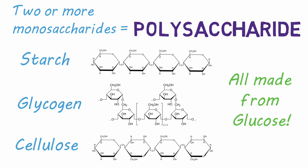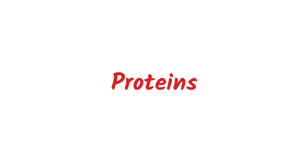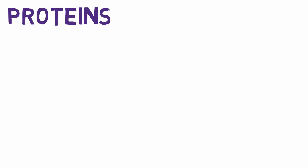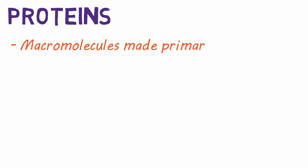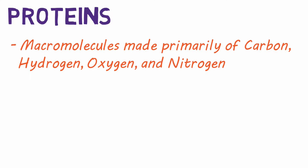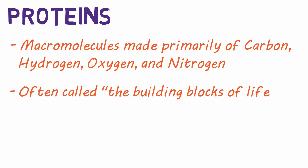Needless to say, carbohydrates are pretty important. Next, let's dive into proteins. Proteins are macromolecules made primarily of carbon, hydrogen, oxygen, and nitrogen, but can have other atoms for certain proteins. Proteins are so abundant in the body and crucial to cell function that they are often called the building blocks of life. Let's first talk about protein structure, and then we'll talk about many of their fantastic functions.